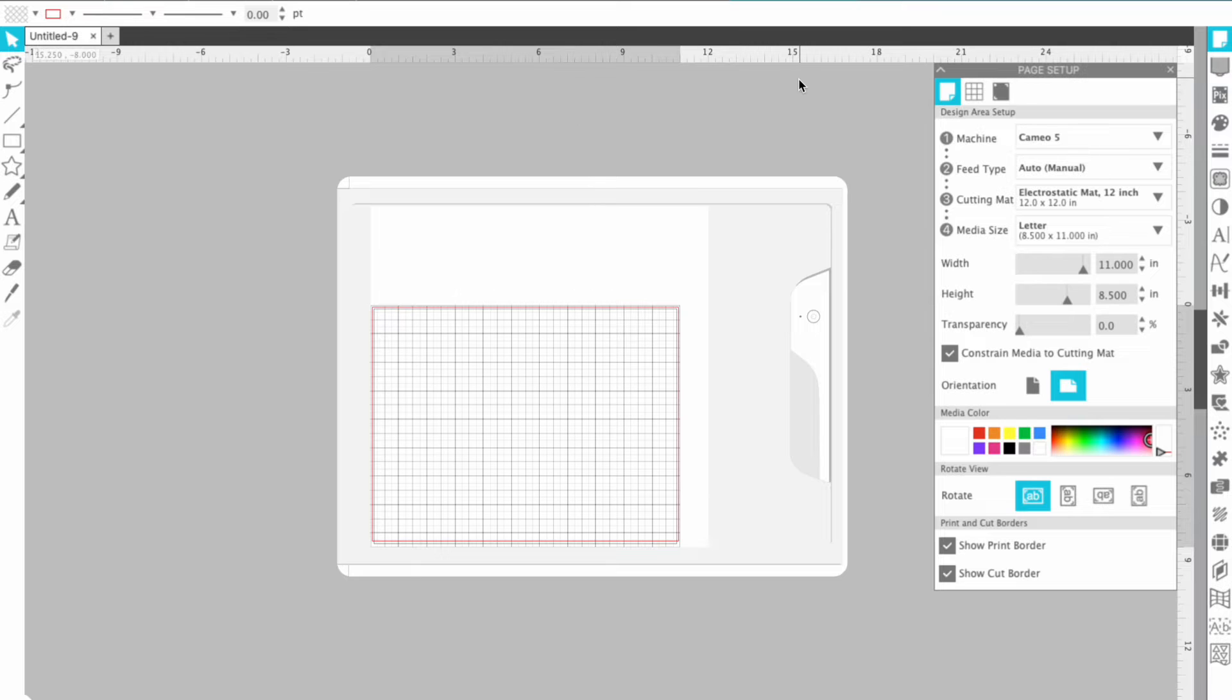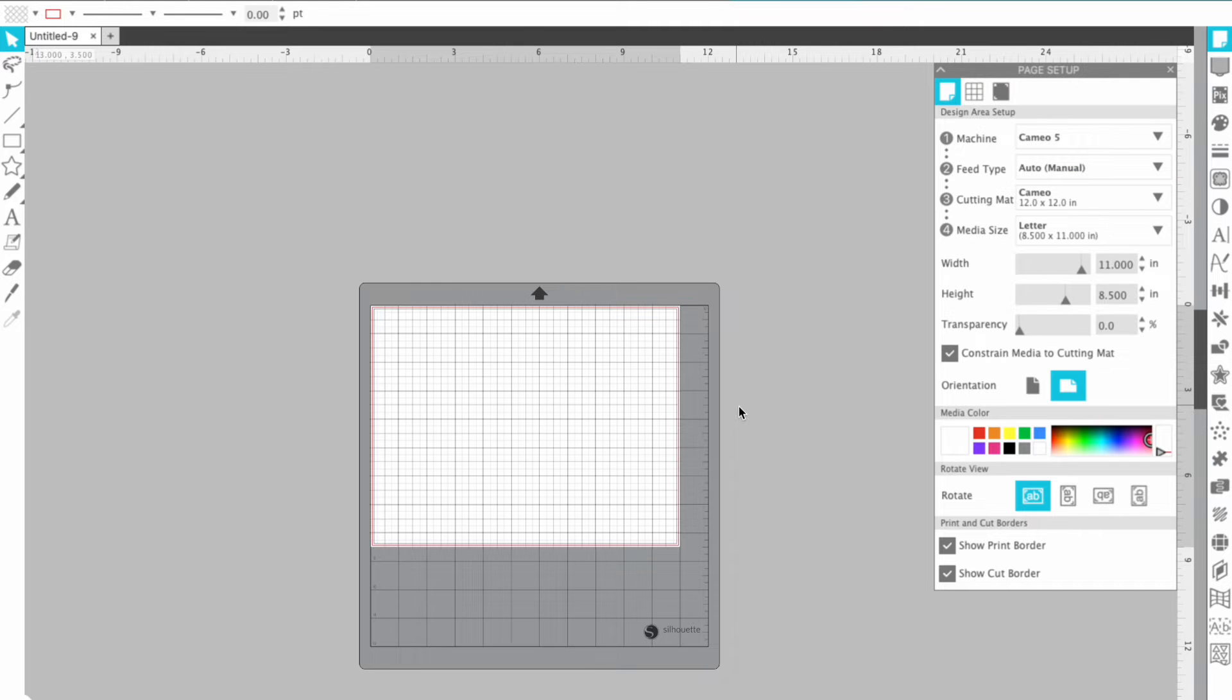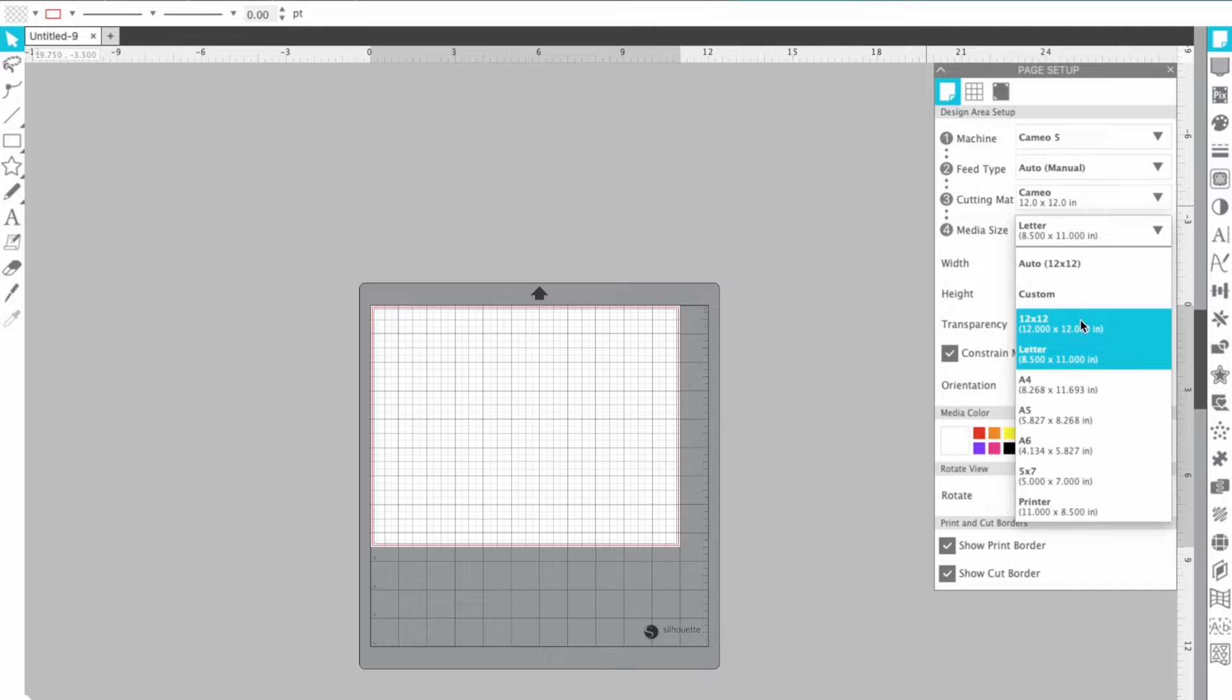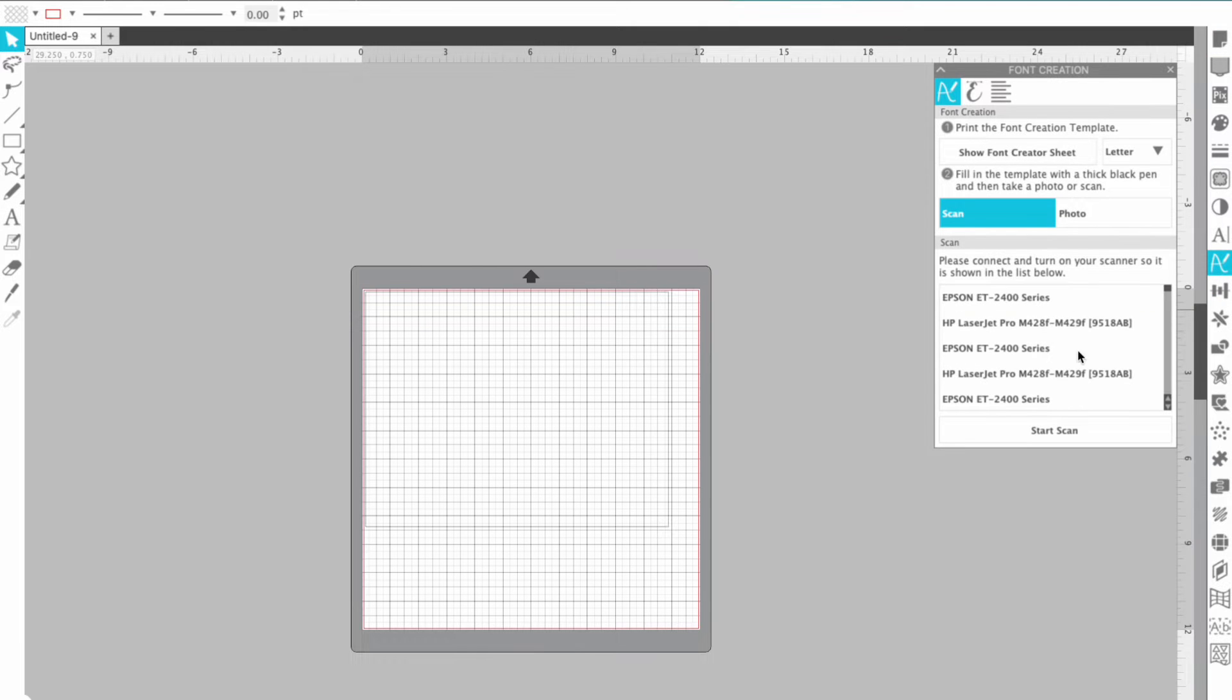All right so if we are in a new sheet the first thing I'm going to do is actually change my cutting mat. I'm just going to make it a regular cutting mat. I think mostly it's just easier to see. You can also just change this. I just want to show you it. Honestly it doesn't really matter where the mat is. Over on the side panel I'm going to go right here to the font creation panel and pop it open.